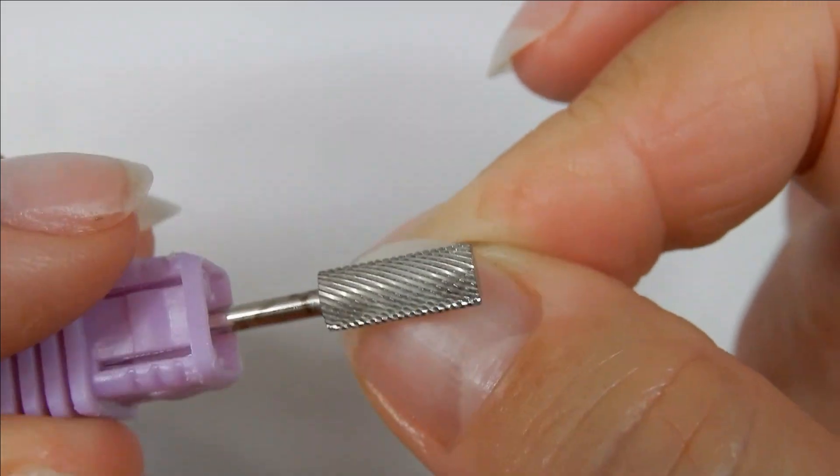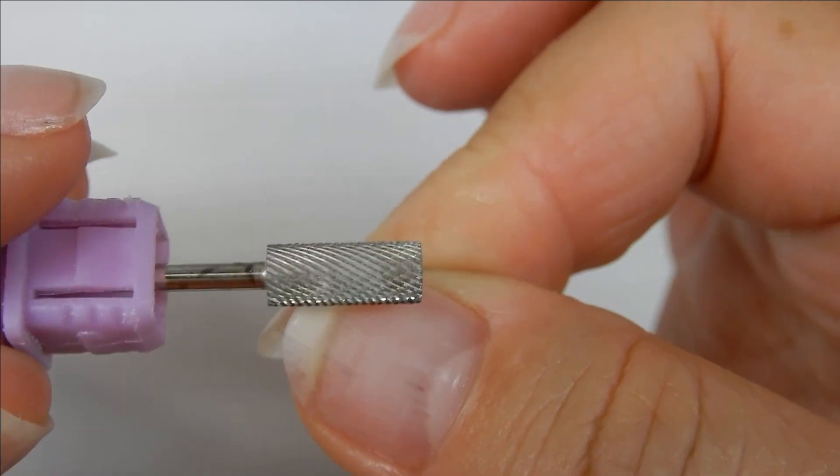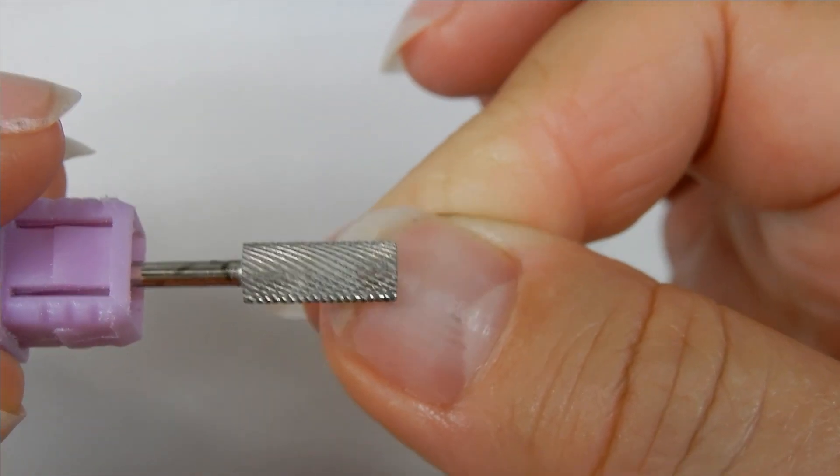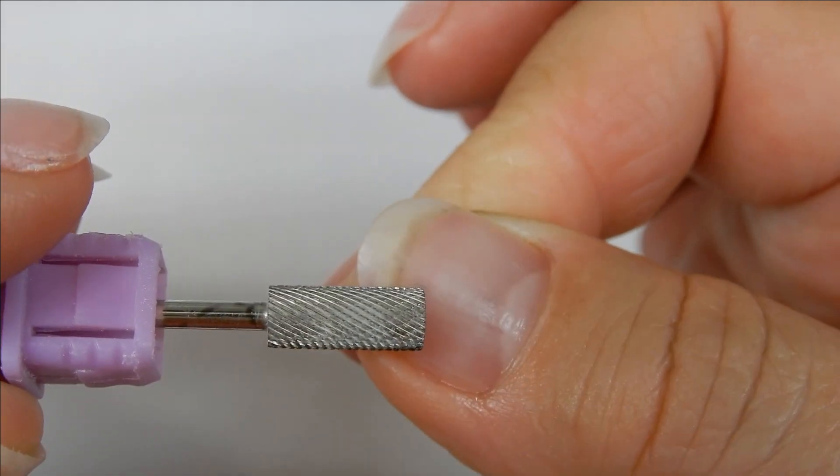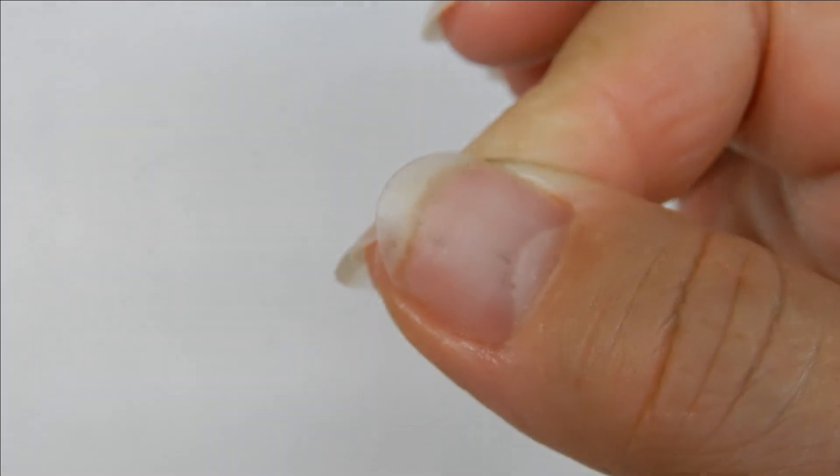And then I put that away and I grab the medium carbide. And this one, I again come in and get the rest of that product mostly off and you'll start to see bits of the nail show through.